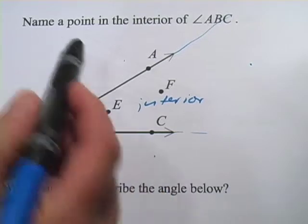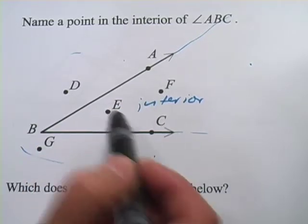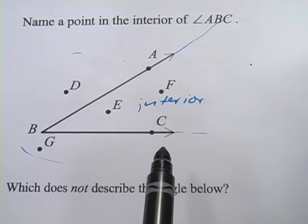So if we were going to name a point on the interior of ABC, you could choose E, you could choose F, either one of those would be correct.